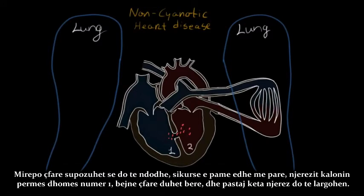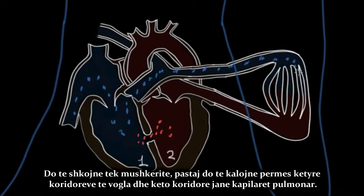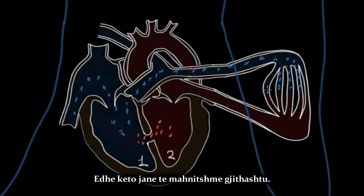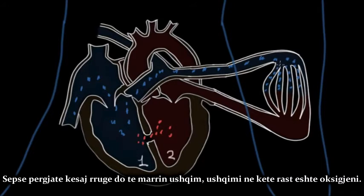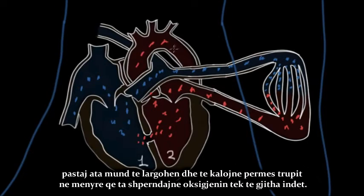But what is supposed to happen, just like what we saw before, was people are entering via room one, they're doing what they're supposed to do, and then those people are gonna leave via these structures that we call the pulmonary arteries, and they're gonna go to our lungs. Then they're gonna go through these little hallways — our pulmonary capillaries — and along the way they're gonna pick up some food, but the food in this case is oxygen. So now they're picking up oxygen, and these guys are satisfied. They can continue on via room two, and from there they can leave and go throughout the body to deliver that oxygen to all of the tissues that need it.